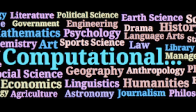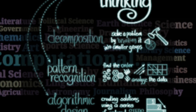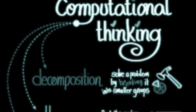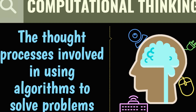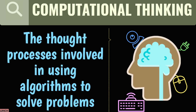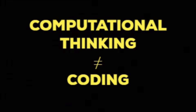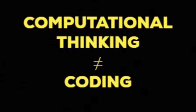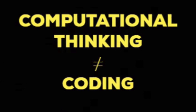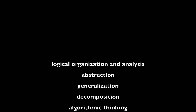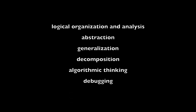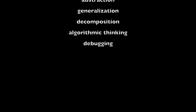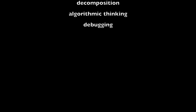Computational thinking is gaining recognition as an important skill set for students, both in computer science and in other disciplines. Computational thinking is not programming; instead it is problem solving by way of computing. It includes logical organization and analysis, abstraction, generalization, decomposition, algorithmic thinking, and debugging.